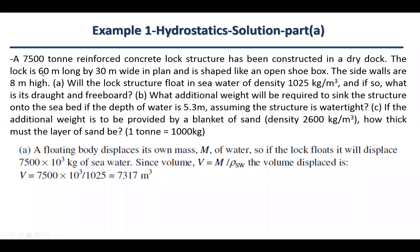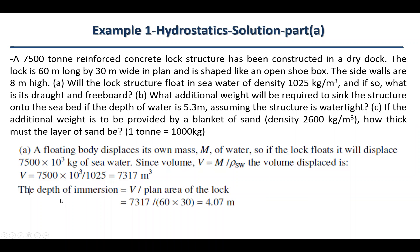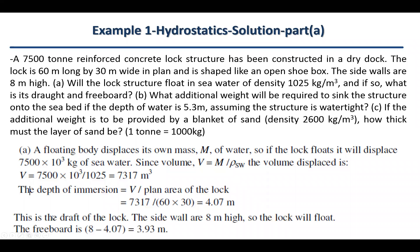Since we have the plan dimensions — length by width — we divide the volume by the area to find the draft. The depth of immersion equals 7,317 divided by (60 × 30), which equals 4.07 meters. This is the draft of the lock. The freeboard is 8 meters minus 4.07 meters, which equals 3.93 meters — so roughly half the structure is submerged and half is freeboard.